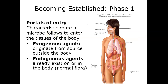We've got two different types of agents regarding portals of entry. Exogenous agents — think 'exo' as outside — come from a source outside the body and the surrounding environment. Endogenous agents — think 'endo' as inside or 'enter' — are microbes such as normal flora that are introduced to a site of the body that is normally sterile, which is what we refer to as an endogenous infection.